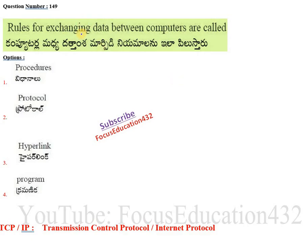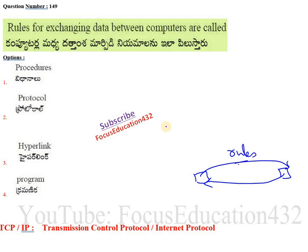Next question: rules for exchanging data between computers are called what? When we send and receive data on a network or the internet, the rules governing this are known as protocols. Protocol is like a rule — in computer terms, it is followed for sending and receiving data. An important example is TCP/IP: TCP stands for Transmission Control Protocol, and IP stands for Internet Protocol.